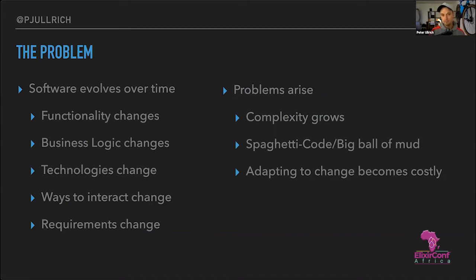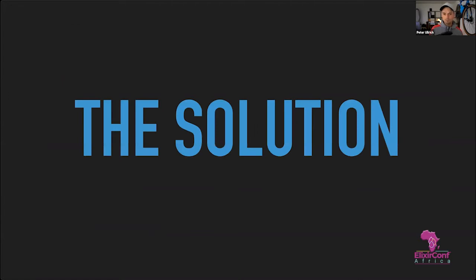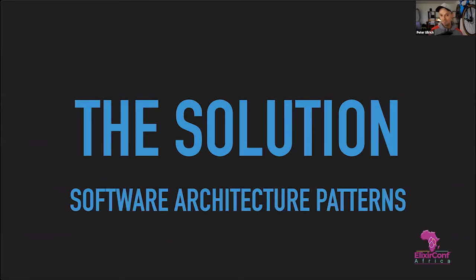Adapting to change means it takes longer to integrate new technologies, like an API you need for your mobile app. Maintenance also becomes more costly. For example, if you use an open-source library that's deep in your software and that project stops being maintained, it may have security bugs you need to work around. The solution — not the only solution, but one — can be software architectural patterns.